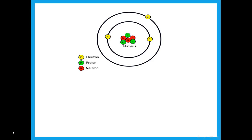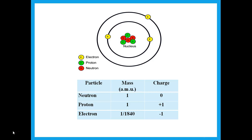In the nucleus we have protons and neutrons. Revolving around the nucleus in energy levels are the electrons, going around in different energy levels or shells. The nucleus contains protons and neutrons, and both are given a mass of one. The electron's mass is regarded as negligible — it is 1/1840, a very very small number.